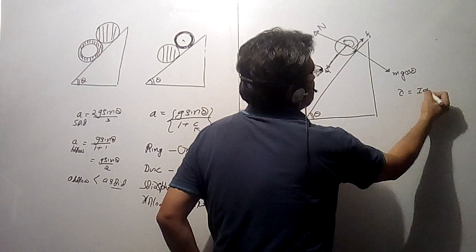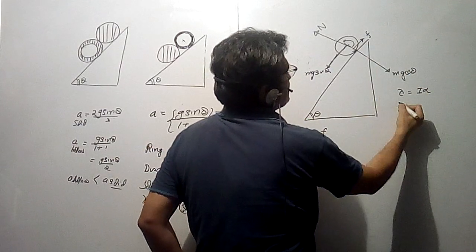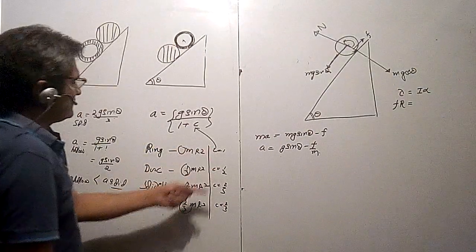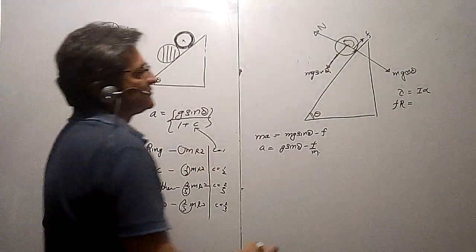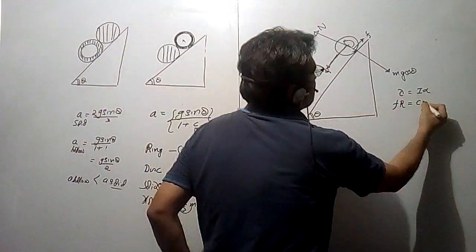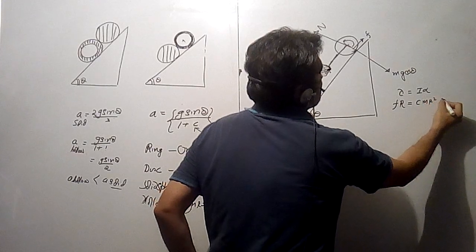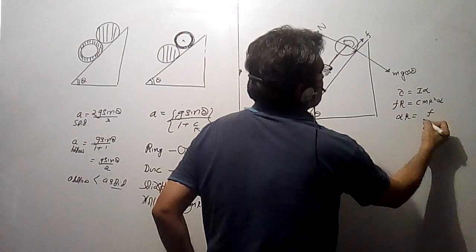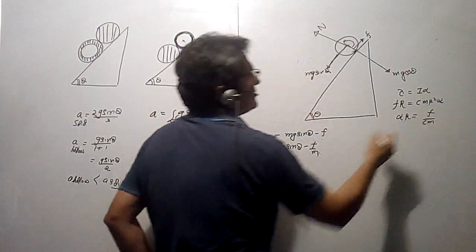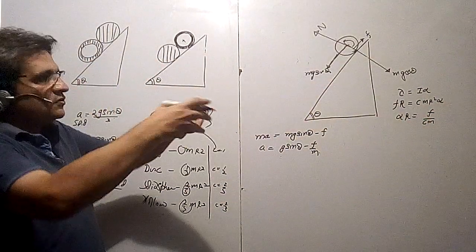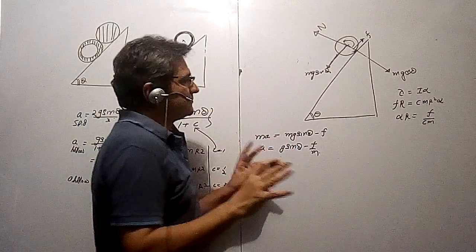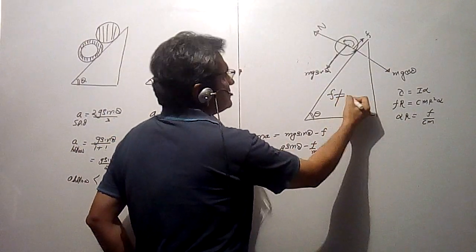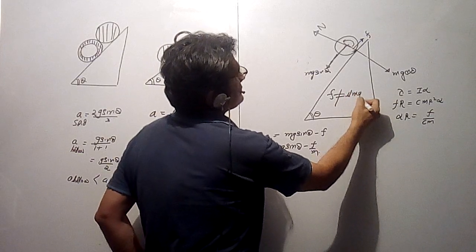Now writing the torque equation: torque = Iα. Torque is f·r, and for I use the general formula C·mr². So f·r = C·mr²·α, which gives f/(Cm) = αr. An important point here: never put f = μmg cosθ, because that is the maximum available friction value.